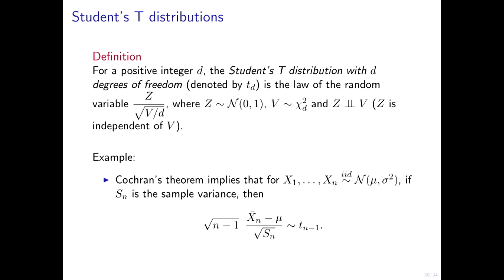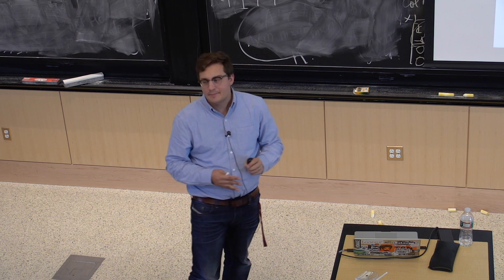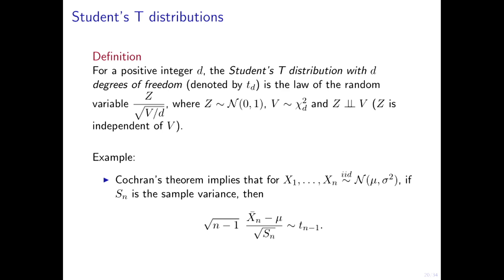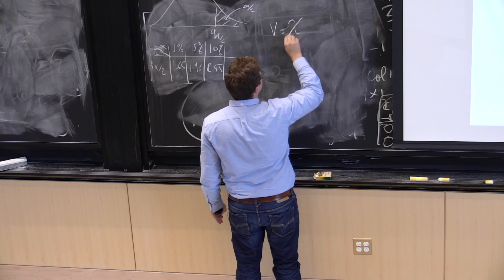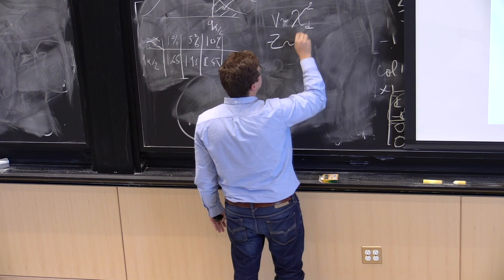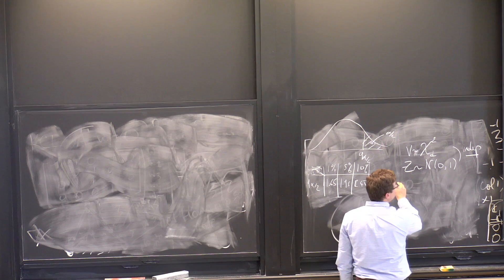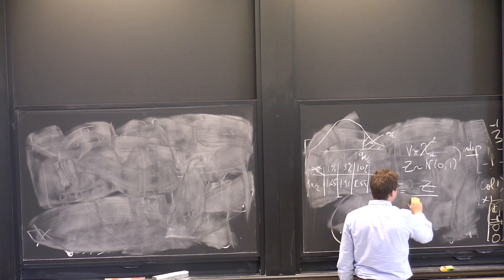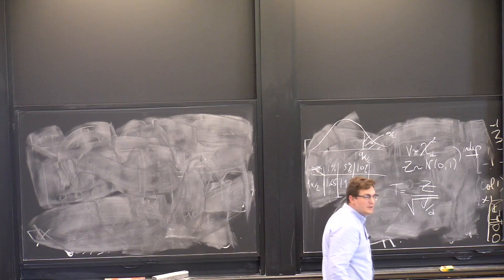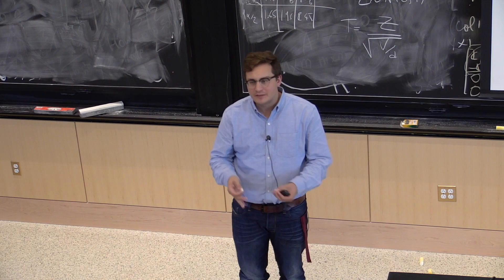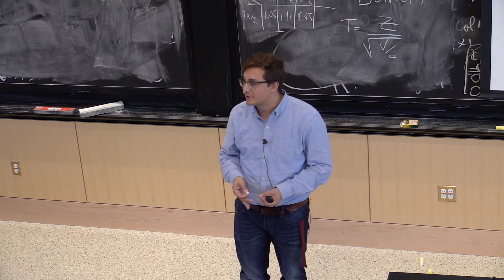The Student distribution arises by taking a standard Gaussian z and dividing it by something. Specifically, I take an independent chi-squared random variable v with d degrees of freedom, independent from z, and form T = z / sqrt(v/d). This is exactly what happens when I divide not by the true variance, but by the empirical variance. If x ~ N(mu, sigma^2), then (x - mu)/sigma = z is standard Gaussian.